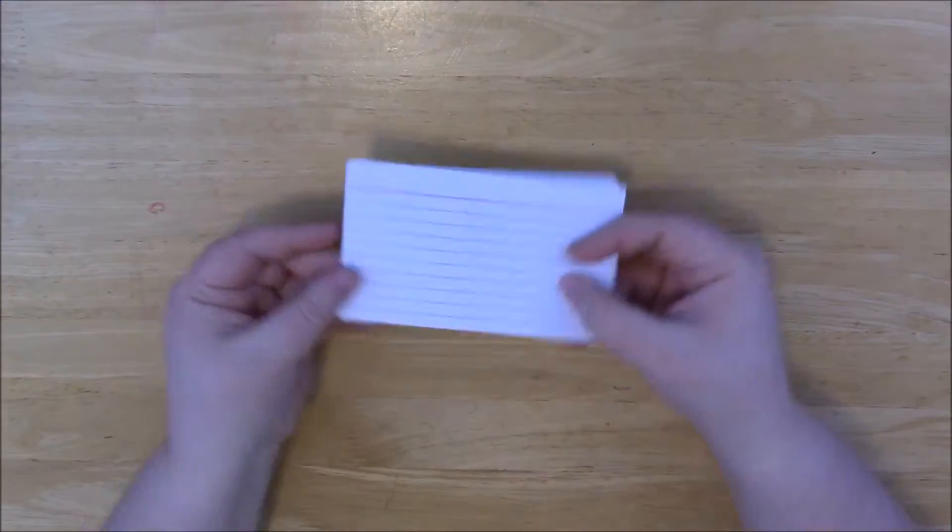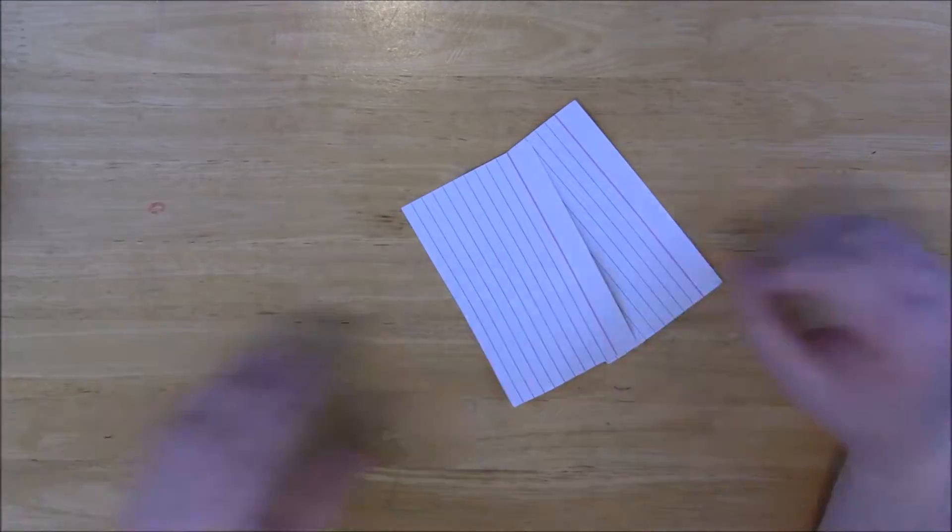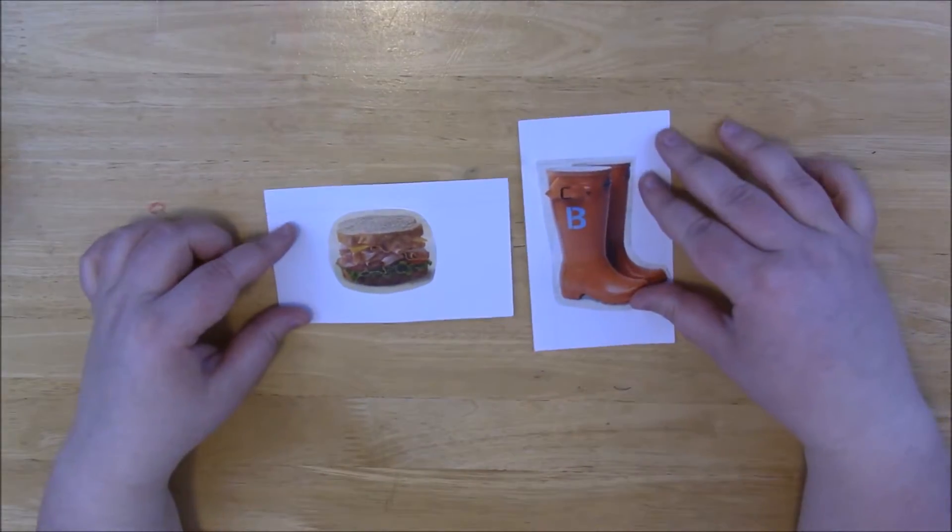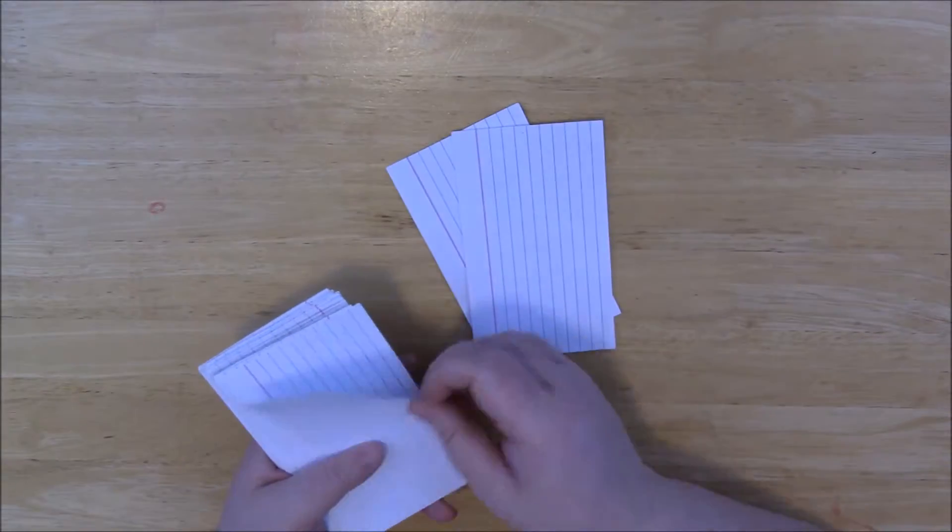Other ways that you can play this game is to give them two of the cards at random and then decide what do these have in common. For example, sandwich has two pieces of bread, boots, there's two pairs of boots. So that's a fun way that they can creatively think.